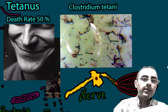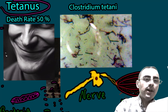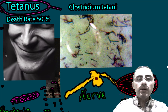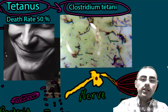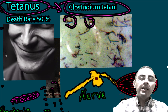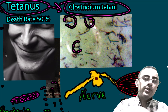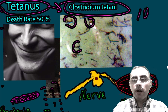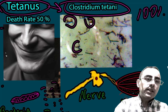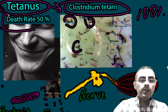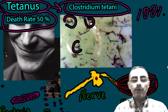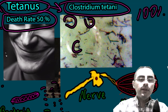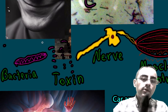Tetanus is a bacterial infection caused by Clostridium tetani, as shown in the image. It's important because it is almost 100% preventable, but if left untreated it has a 50% death rate, making it a highly fatal disease.